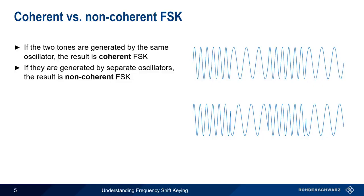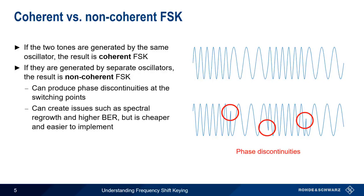In the case of non-coherent FSK, the lack of a common oscillator can produce phase discontinuities at the switching points. These can be problematic, since these sharp changes in phase can lead to issues like wider signal bandwidth or bit errors. Non-coherent FSK is however cheaper and easier to implement.